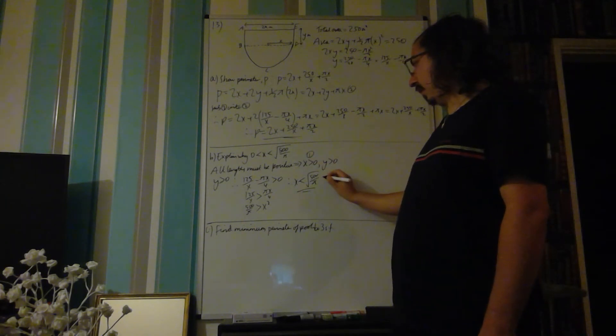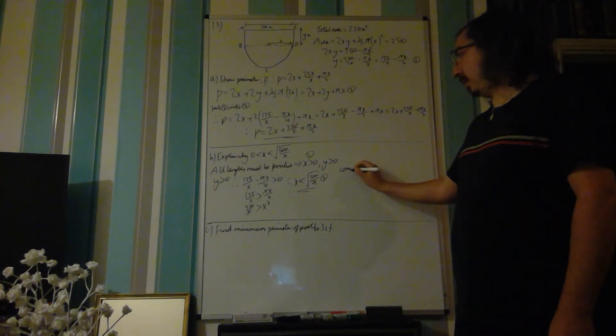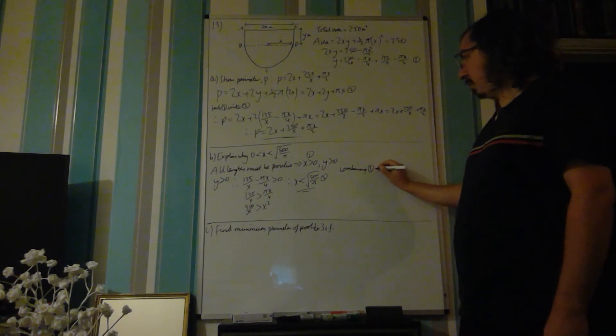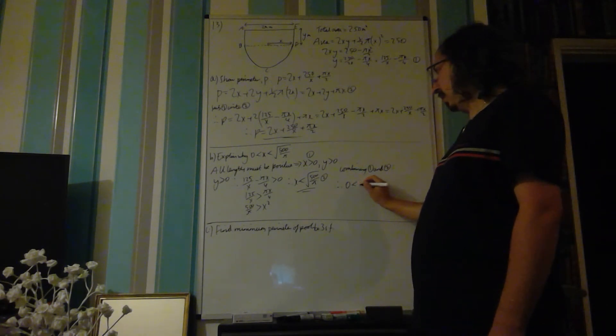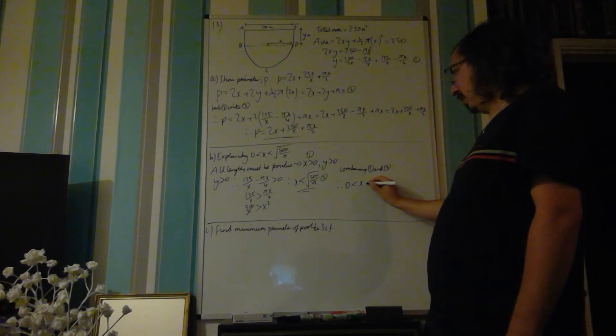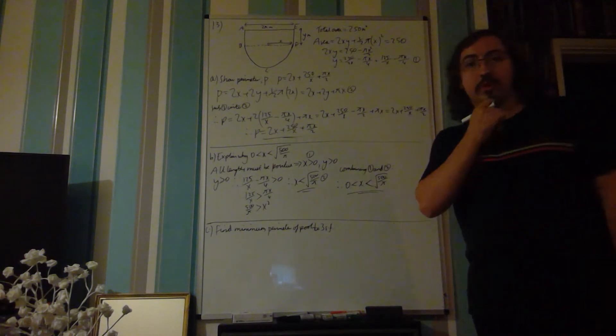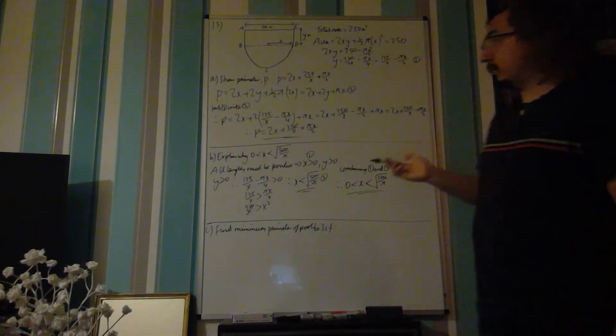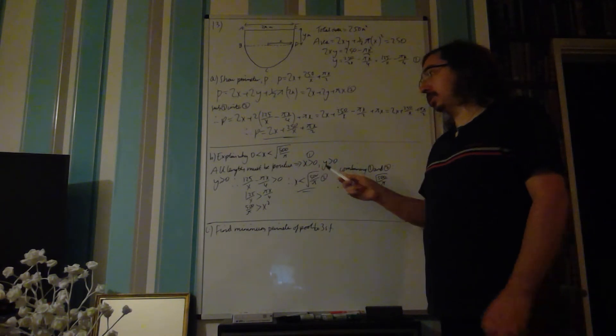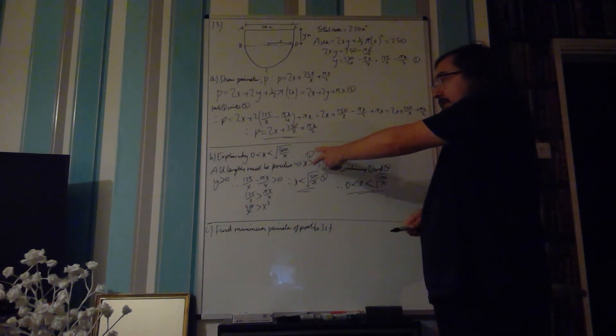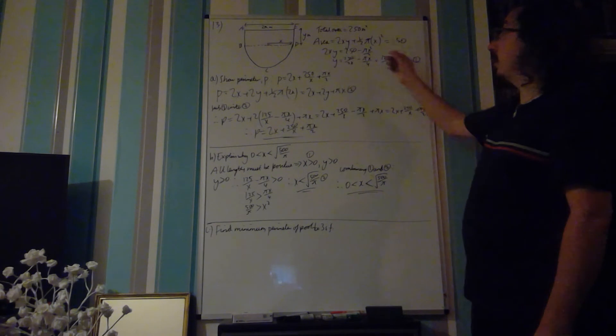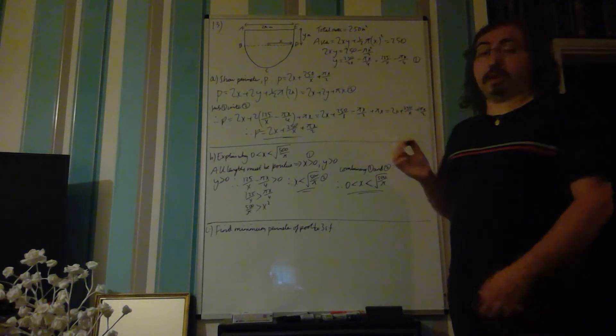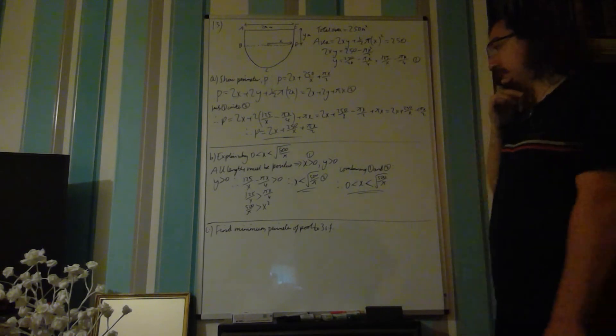If I call that equation 1, I call that equation 2. So combining 1 and 2, therefore, x is greater than 0 and less than the square root of 500 over pi. So you can get one of the marks in relation to recognizing that the length must be positive and stating that. But to get the second mark, you are reliant on understanding where this relationship for the area came from in the first part.